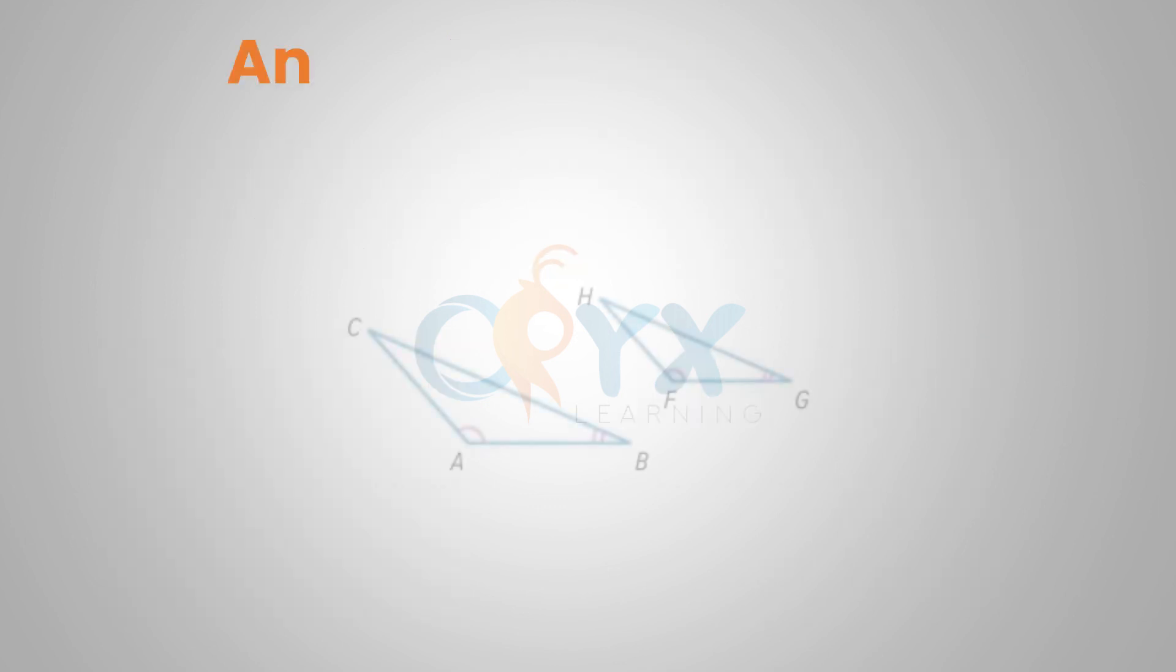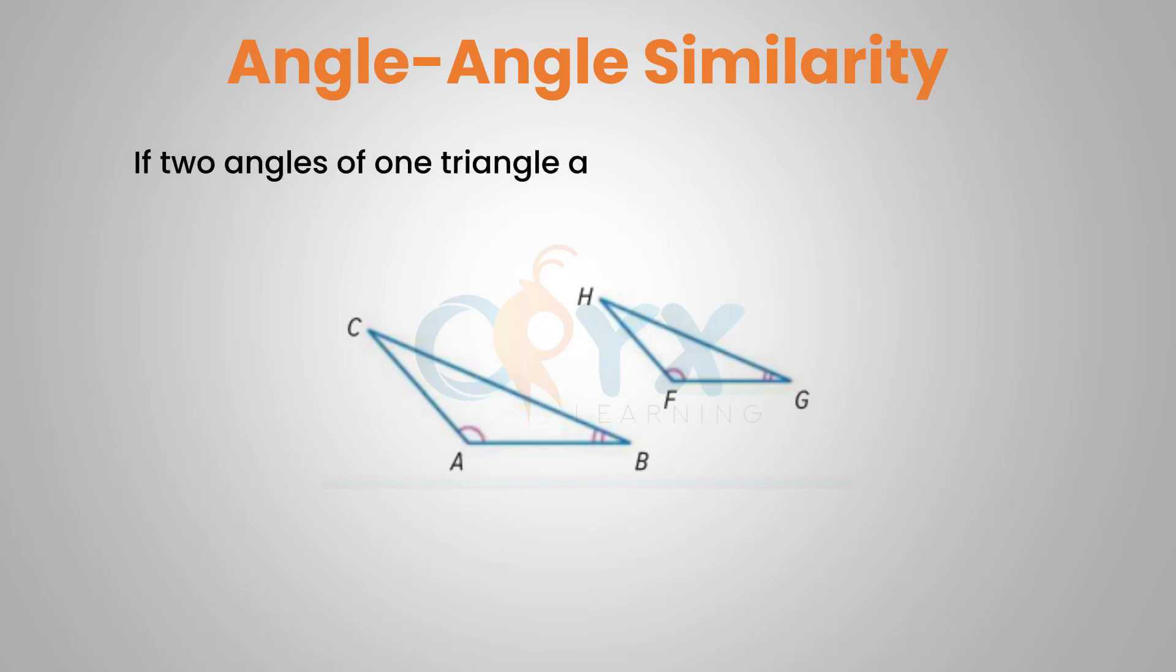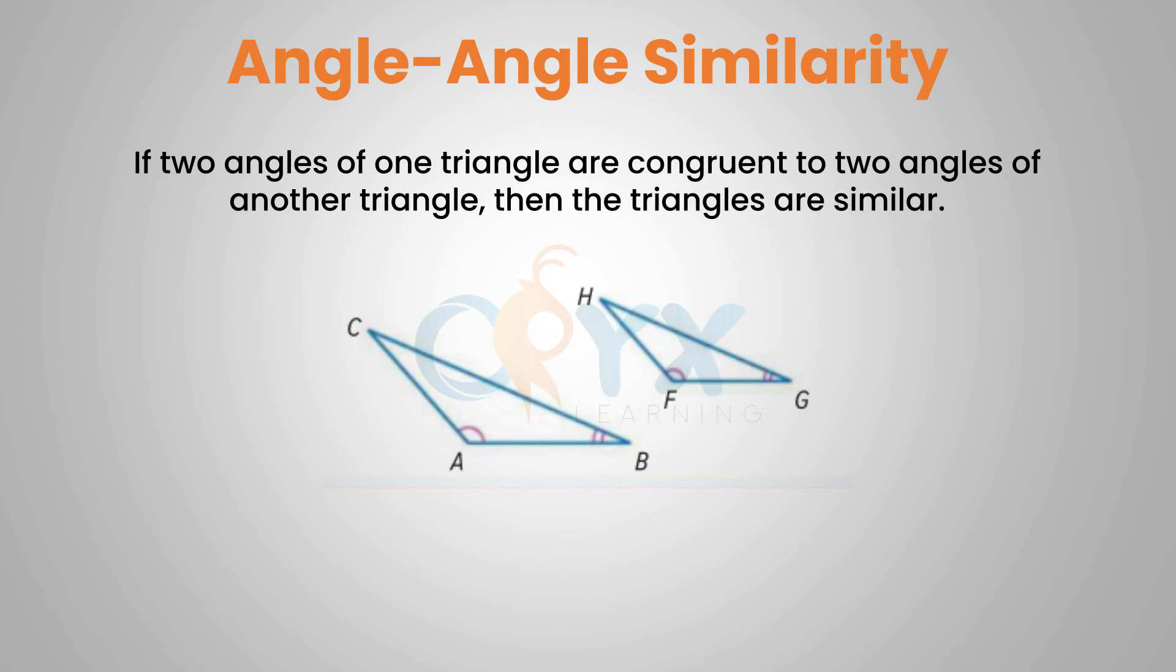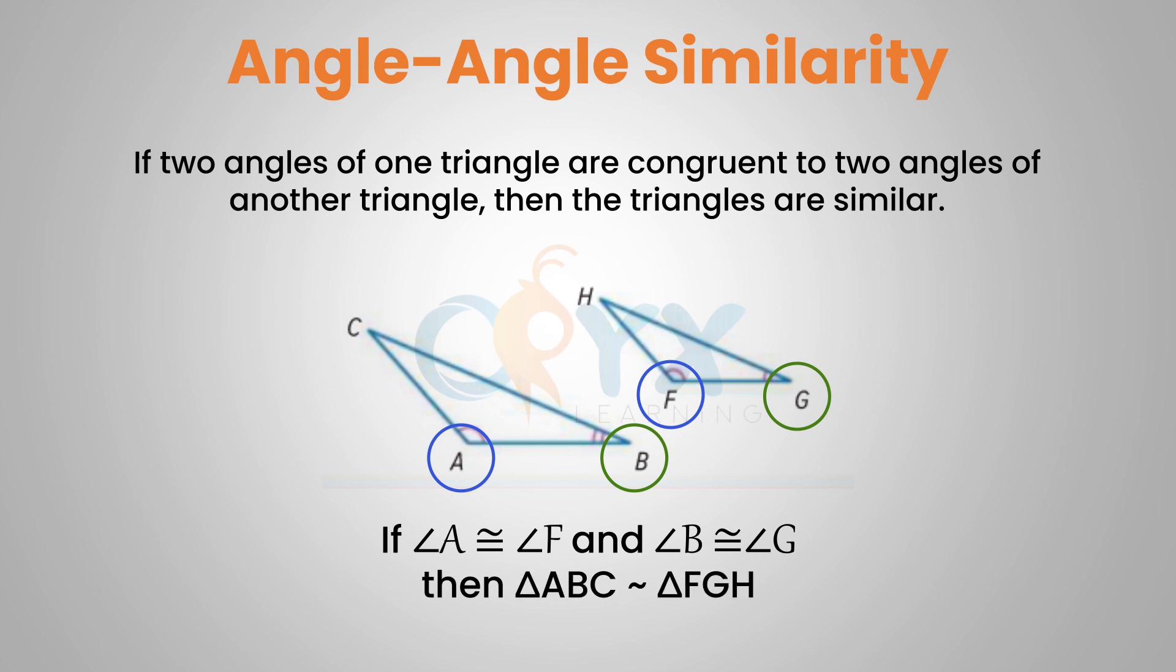So remember, for angle-angle similarity, if two angles of one triangle are congruent to two angles of another triangle, then the triangles are similar. In the image shown, if angle A is congruent to angle F and angle B is congruent to angle G, then the two triangles, triangle ABC and triangle FGH, are similar.